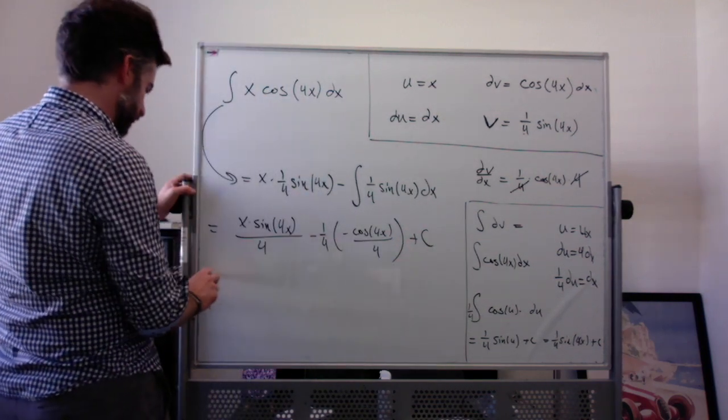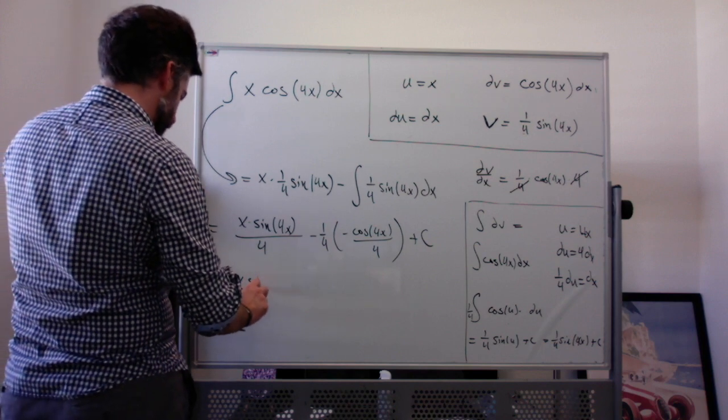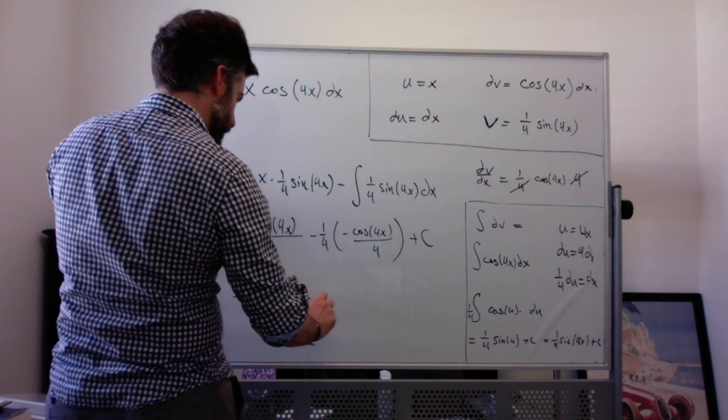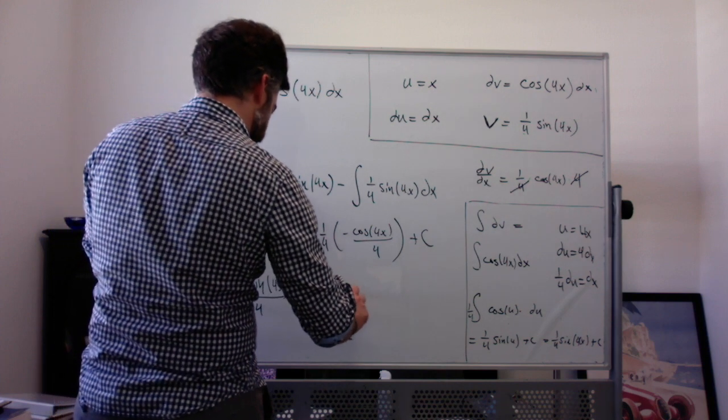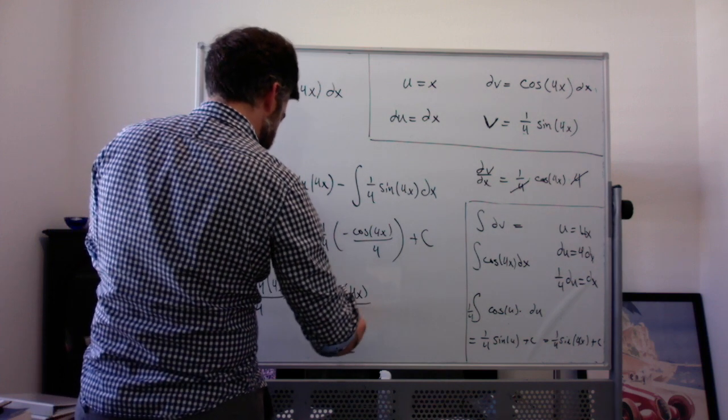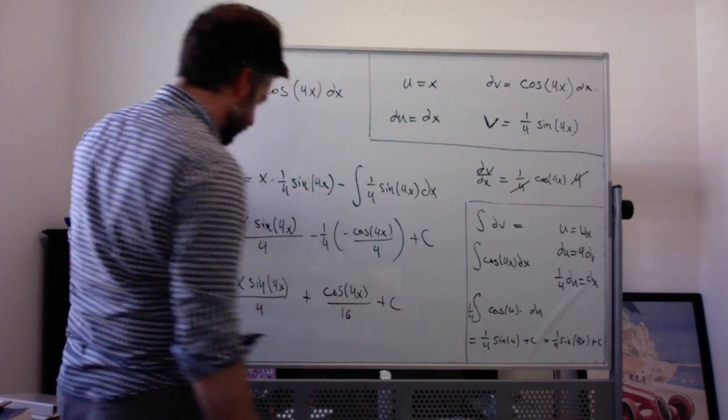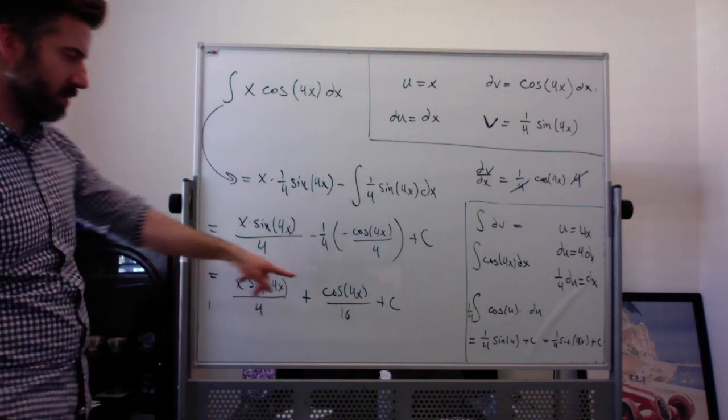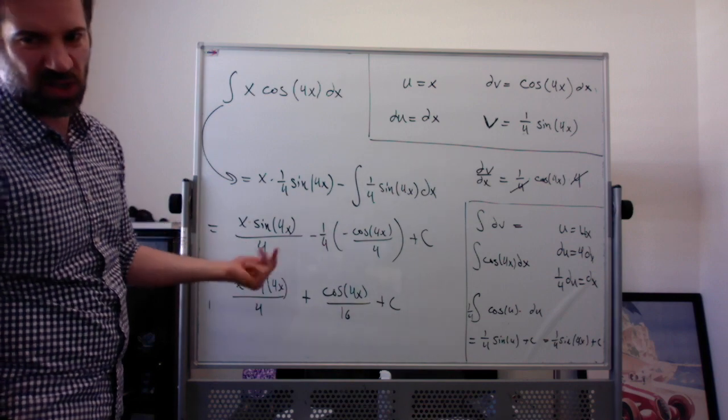And then finally I would simplify and get x sine of 4x all over 4, plus cosine of 4x all over 16 plus C. I don't think it's necessary to do the common denominator here and write it as like 4x sine of 4x plus cosine of 4x all over 16, but you could if you wanted to.